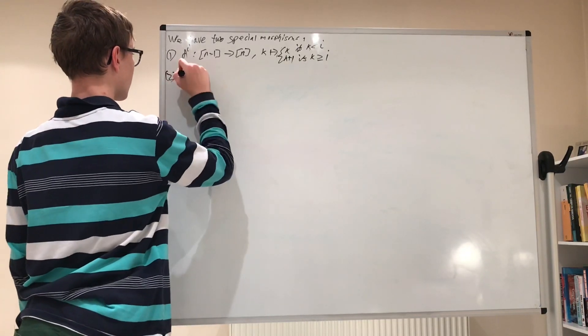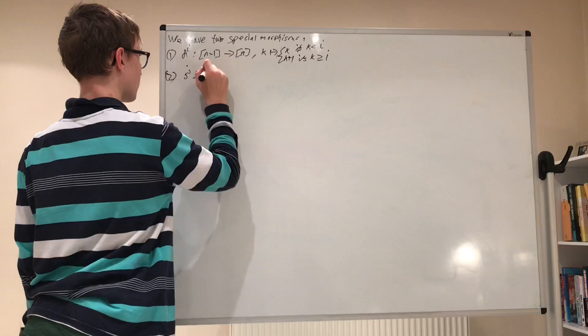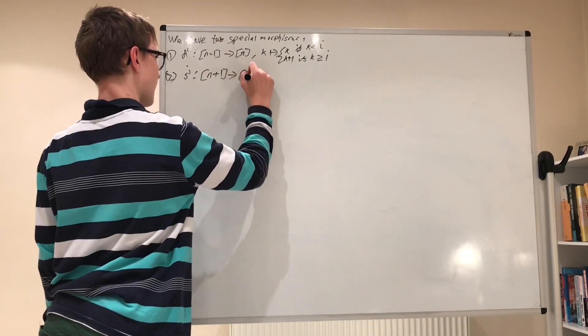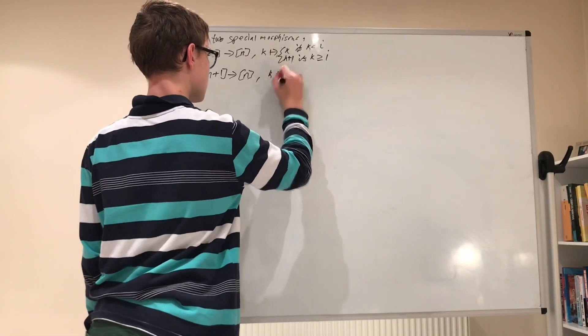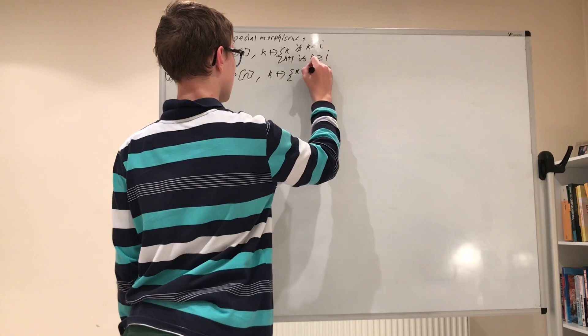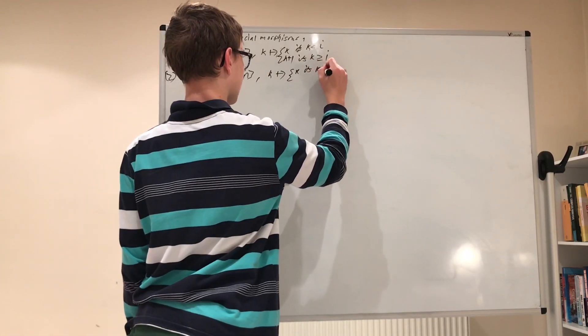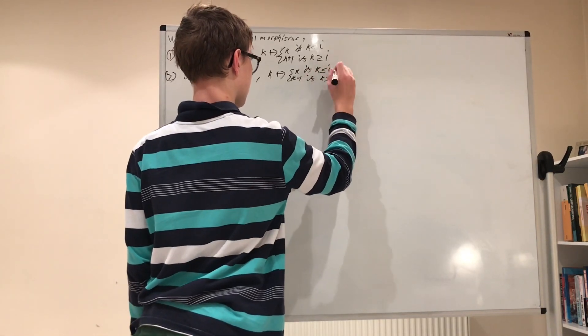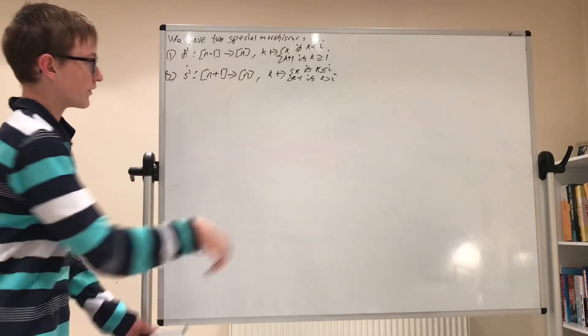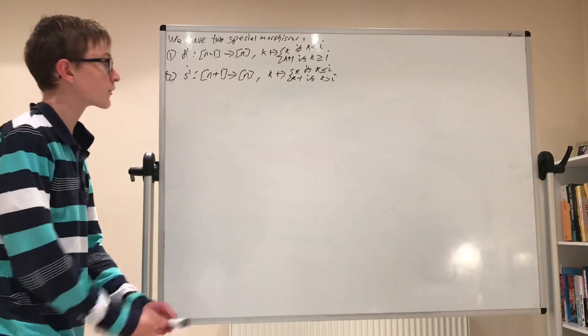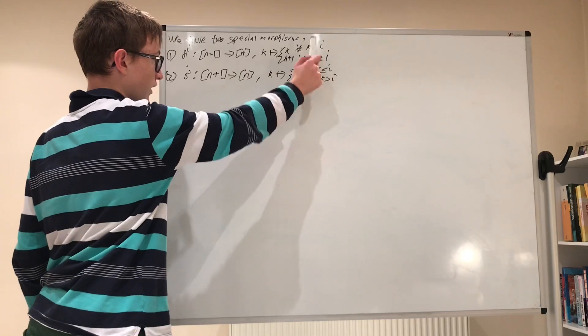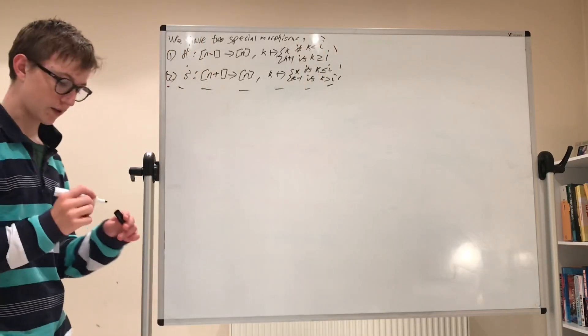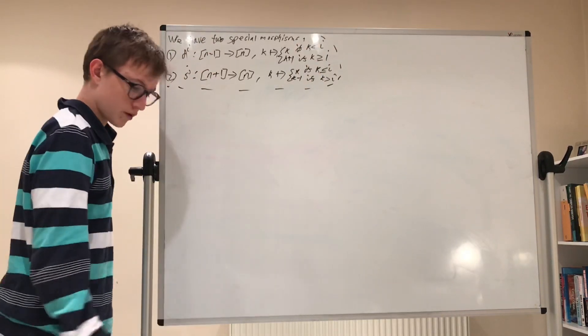And then, secondly, the second morphism we have is sj, which takes you from n plus one down to n. And it maps k to, again, k if k is less than or equal to i, and k minus one if k is strictly bigger than i. So all that the difference is, is this sign right here, and the fact that this equals right here gets put here. So really, they're not that difficult. They're not that dissimilar.